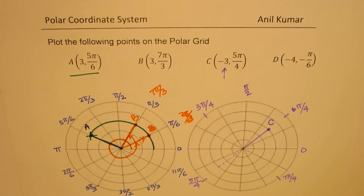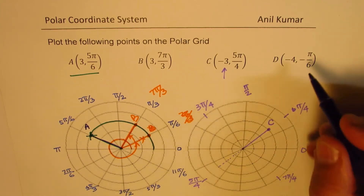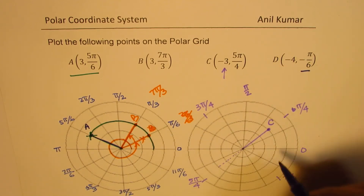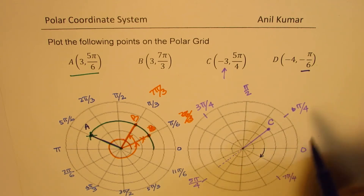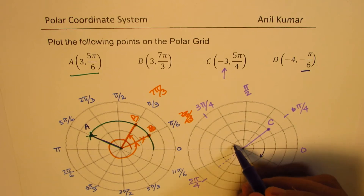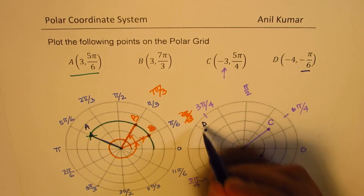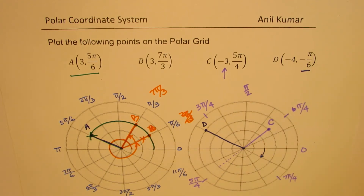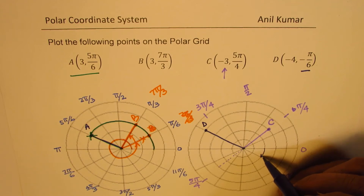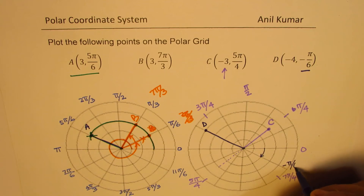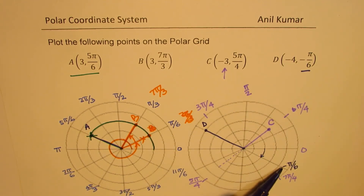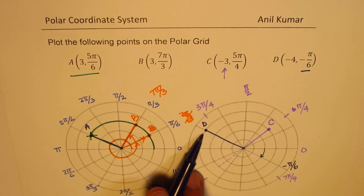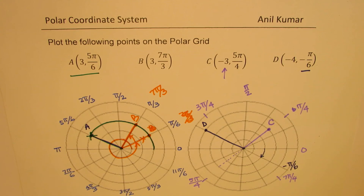The last point is d: (-4, -π/6). First, -π/6 is a clockwise angle, so we rotate clockwise to -π/6. Then since r is -4, we do not go in that direction but in the opposite direction — 1, 2, 3, 4 units — so point d ends up in the second quadrant when compared with Cartesian coordinates.